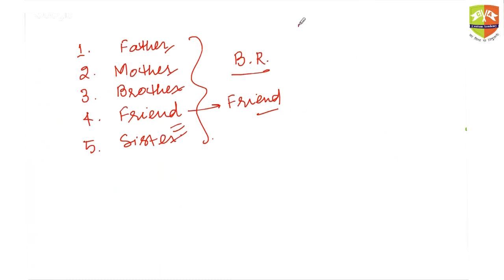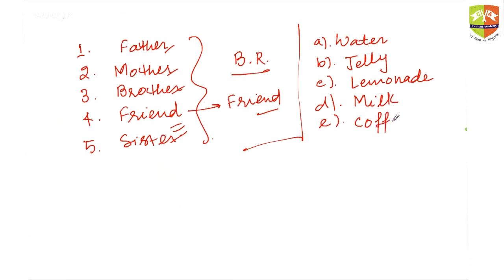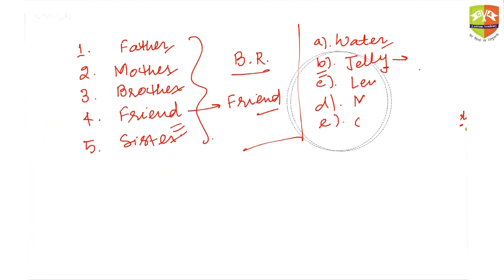Next: find the odd word. Option A is water, B is jelly, C is lemonade, D is milk, E is coffee. Jelly is the right answer. Why? Because water, lemonade, milk, and coffee are all liquids, but jelly is not a liquid — you can call it semi-solid.